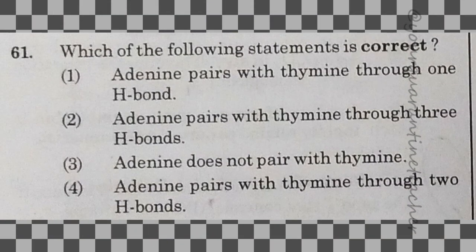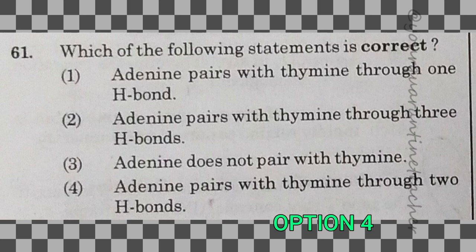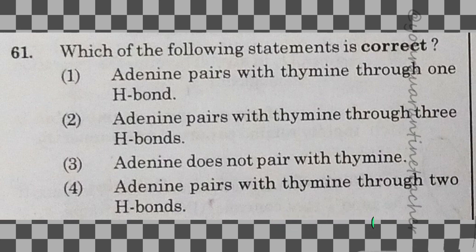61st question: which of the following statements is correct? Adenine pairs with thymine through 2 bonds. The answer is option 4.